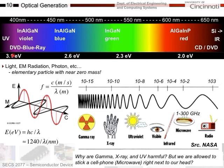Various semiconductors span the spectrum: silicon is in the infrared; aluminum gallium indium phosphide in the red; indium gallium nitride in the green; indium aluminum gallium nitride in the blue; adding more aluminum reaches the violet — the technology used in Blu-ray DVDs. The visible spectrum is only a tiny portion of the entire electromagnetic spectrum. Why are ultraviolet, x-ray, and gamma rays harmful while microwave cell phones are not?